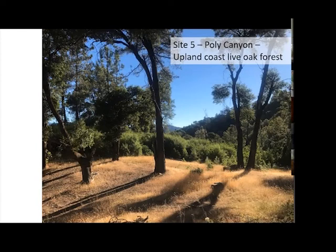Our sixth site is the Polly Canyon upland coast live oak forest — a pretty familiar forest type with bay laurel and mostly coast live oak.